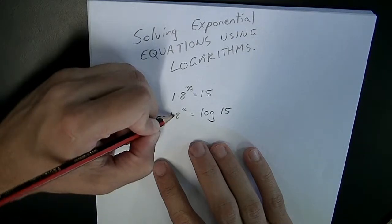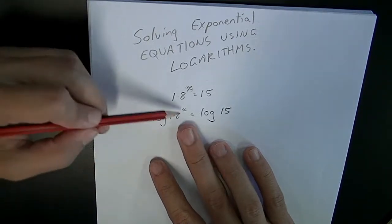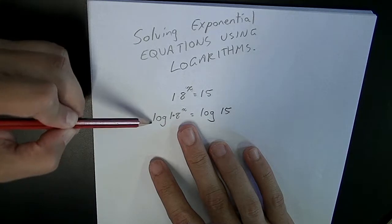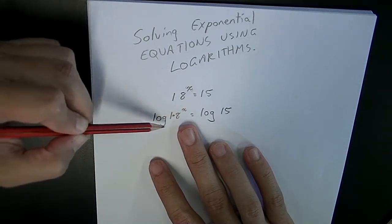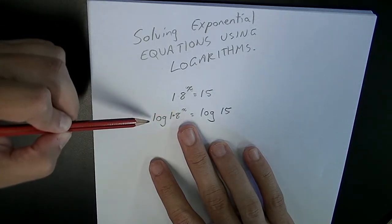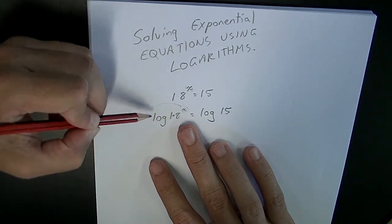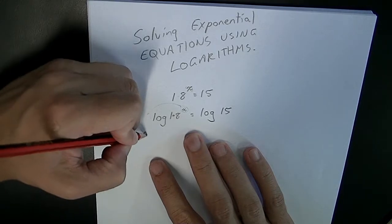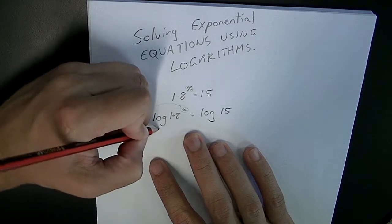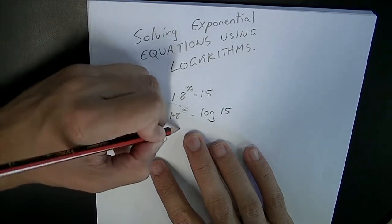Now that we're at this stage, you should be able to see that log law 3 might be able to help us out, so that x can move from here out to the front. We're going to end up with x equals log 1.8. Sorry—